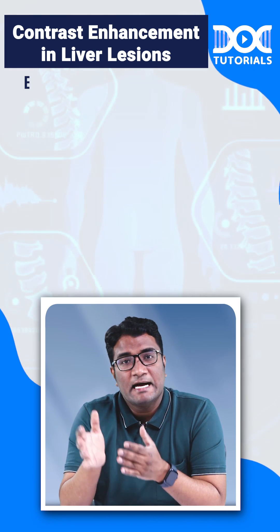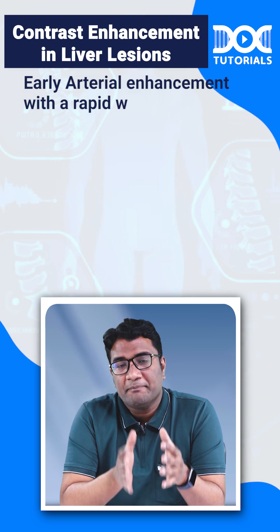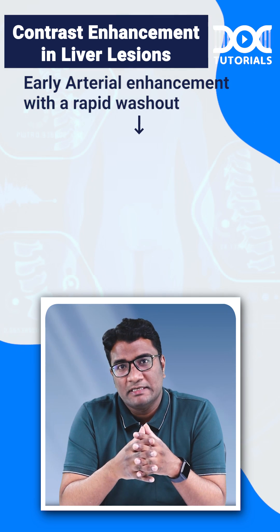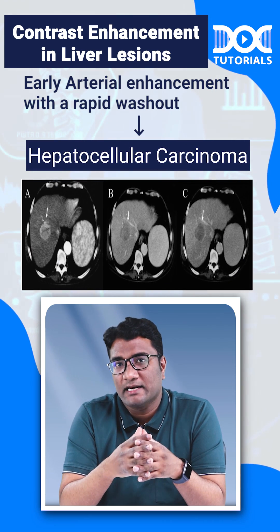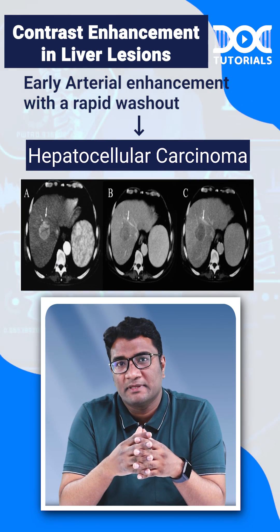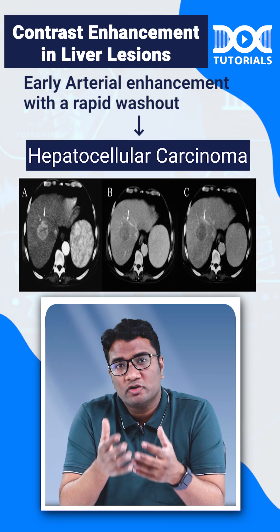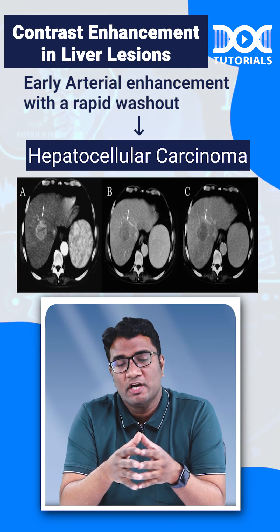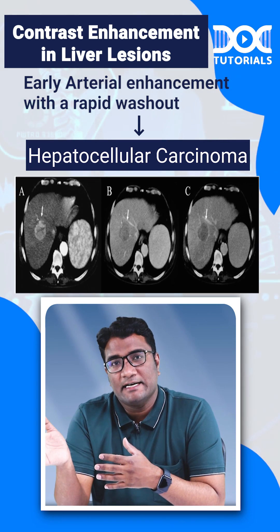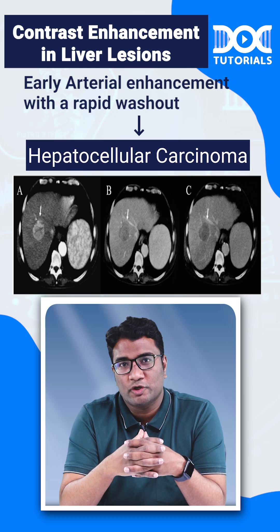And if you see a lesion in the liver which shows early arterial enhancement with a rapid washout, this is hepatocellular carcinoma. Hepatocellular carcinoma, because of its supply by the hepatic artery, shows early arterial enhancement and a rapid washout.